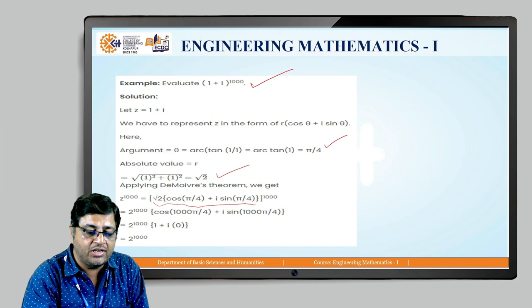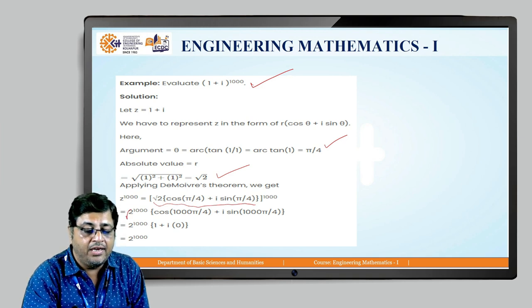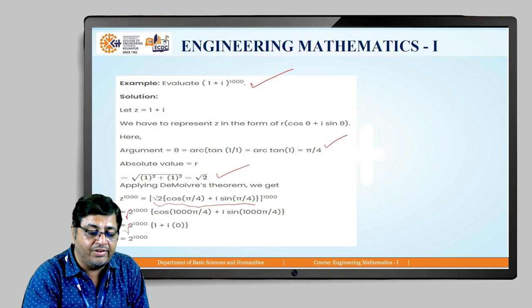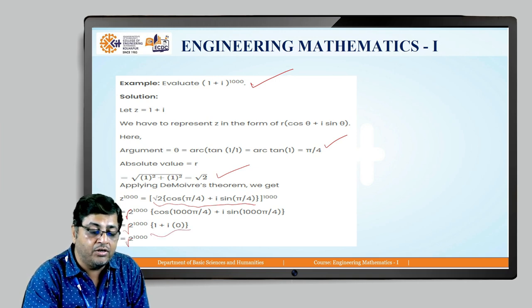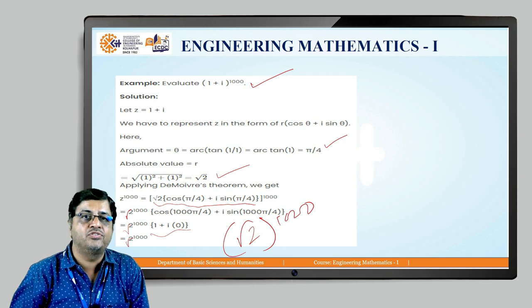Now applying De Moivre's theorem, we get √2 raised to 1000 times (cos(1000π/4) + i sin(1000π/4)). So that will be √2 raised to 1000 times the bracket. Now the value of cos(1000π/4) is 1 and the value of sin(1000π/4) is 0. So you get 1 + i·0, and so finally you get √2 raised to 1000. So √2 raised to 1000 is the answer of (1 + i) raised to 1000.